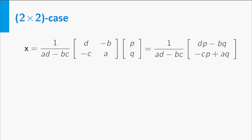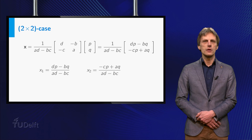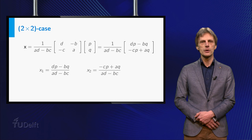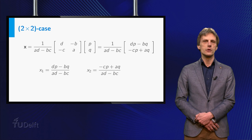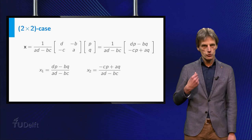So we find the following formulas for x1 and x2. x1 is equal to (dp minus bq) divided by (ad minus bc) and x2 is equal to (-cp plus aq) divided by (ad minus bc). Can you already see that each of these formulas is actually the quotient of two determinants? In both formulas the denominator is equal to the determinant of A, but what about the numerators?